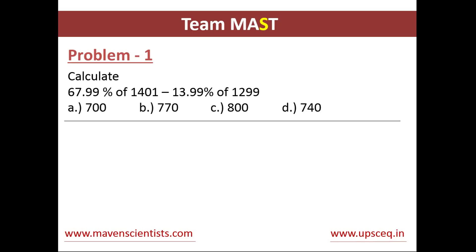Let's start with calculations. First of all, we'll round off all the figures. We can round off 67.99 to 68, 1401 to 1400, 13.99 to 14%, and 1299 to 1300. Now our equation changes entirely.